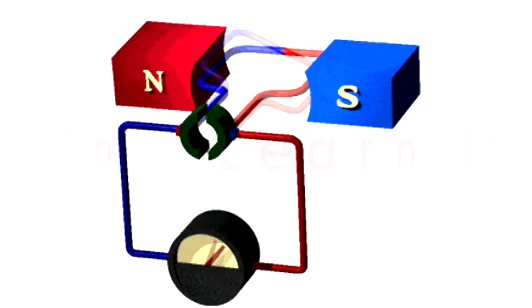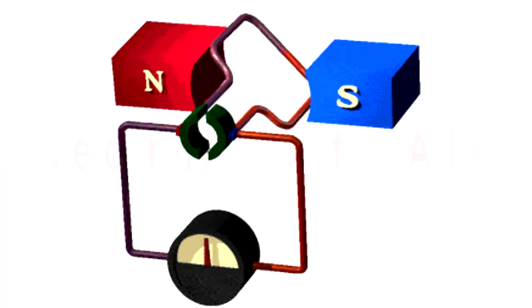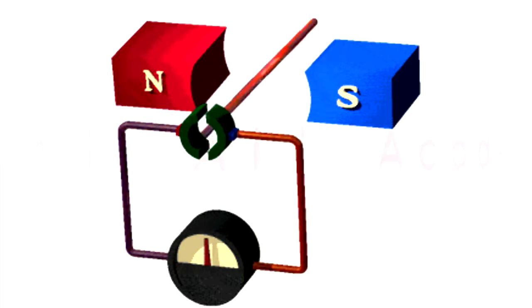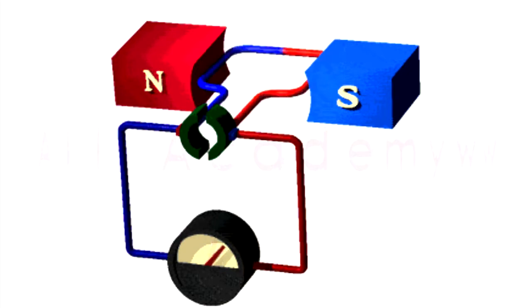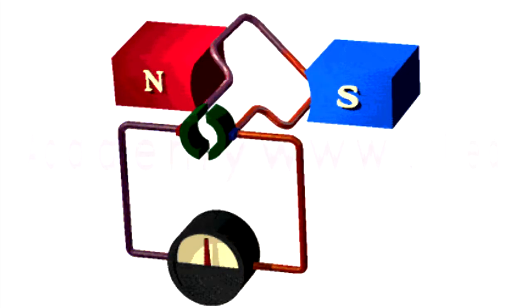This is the animation of a basic DC generator. Watch carefully that the current is induced in two opposite directions in the two parts of a single conductor. To separate the two opposite directional current flows, a special arrangement is used.